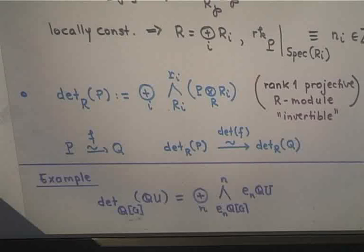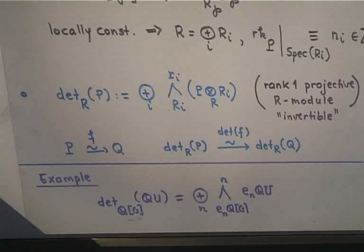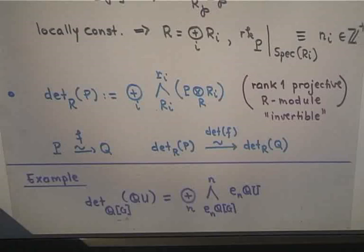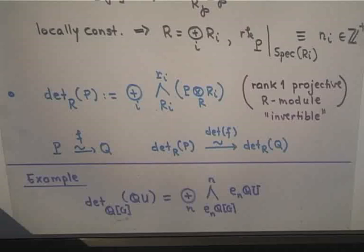This construction is functorial — weakly functorial, in fact. If you have an isomorphism F of R-modules P and Q, then you can associate to that the determinant of F in the obvious manner. Since they are isomorphic, their rank functions are the same, so the top exterior powers are the same, and you get a determinant of F establishing an isomorphism between the determinants of the two modules.